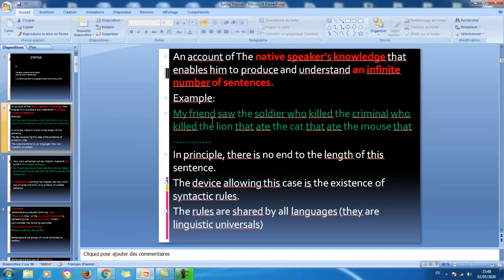Look at this example: my friend saw the soldier who killed the criminal, who killed the lion, that ate the cat, that ate the mouse, that, that and that. We can go on endlessly putting sentences together linked by means of who and that. Which means, in principle, there is no end to the length of this sentence. This is what people know as a rule in their mind. They can make use of it while speaking, while writing.